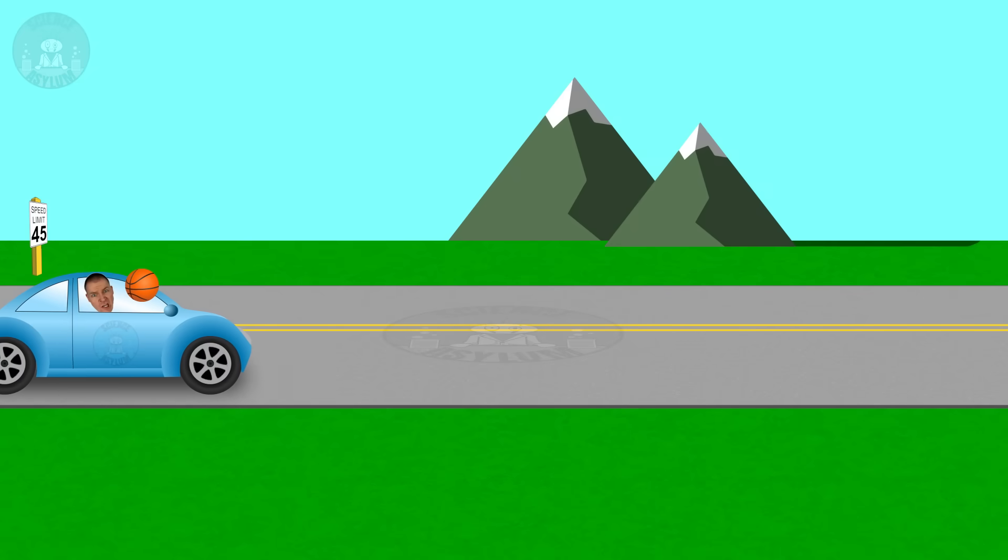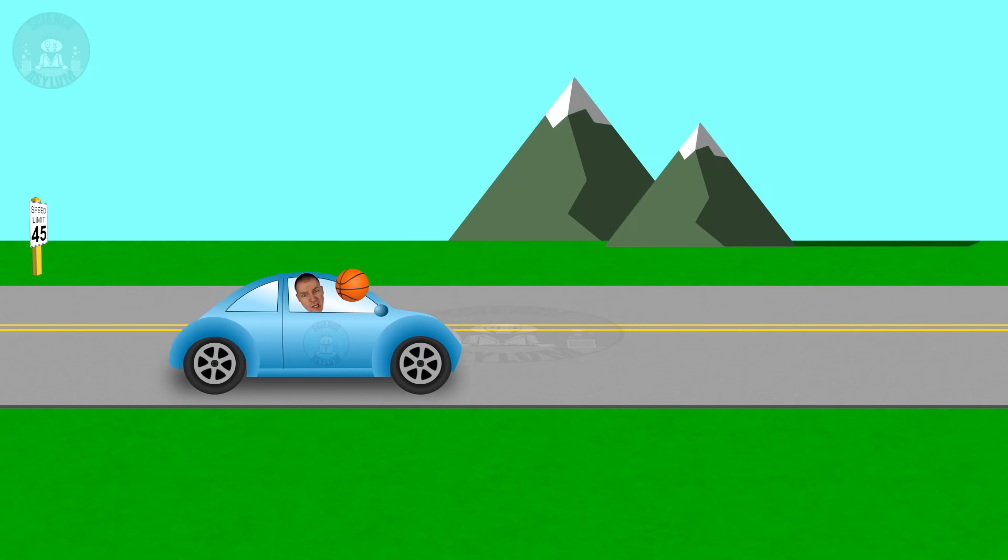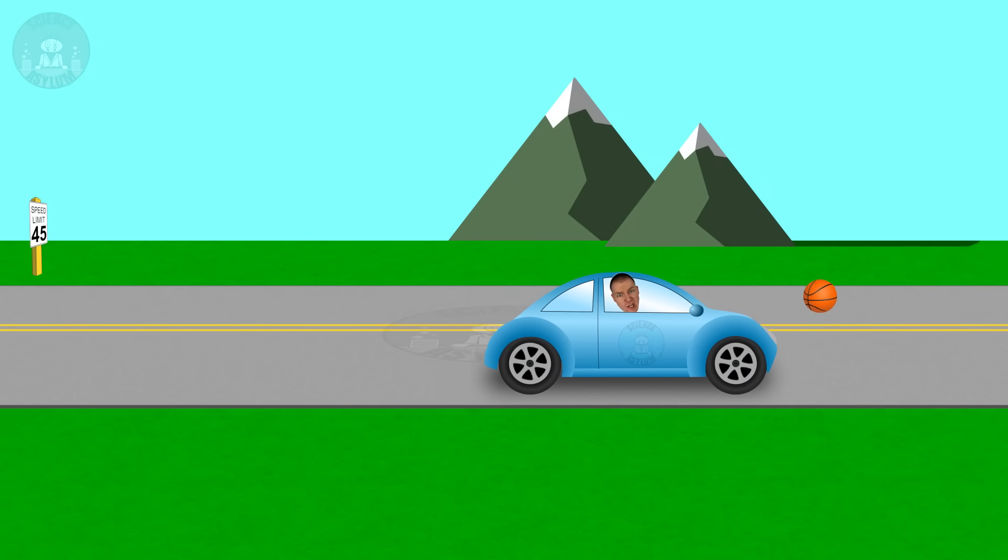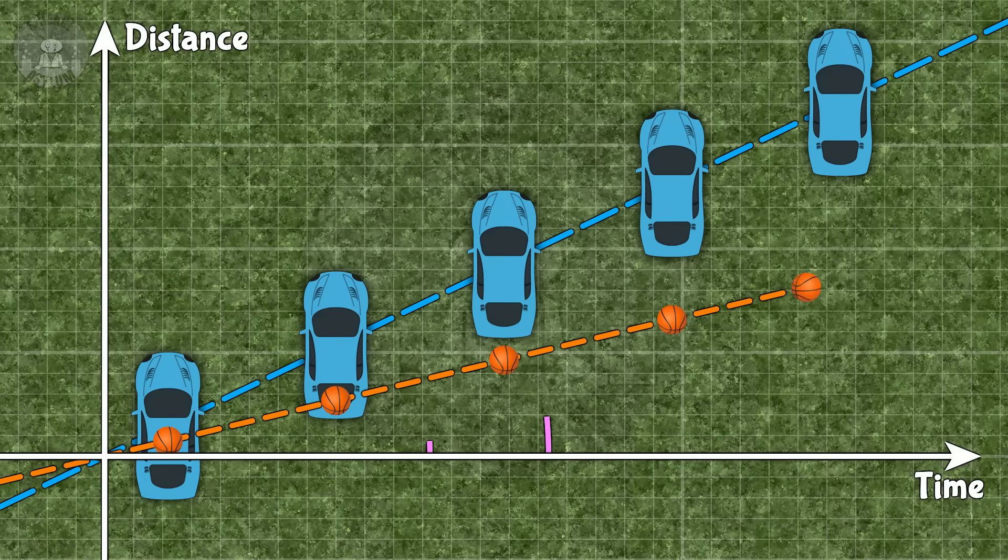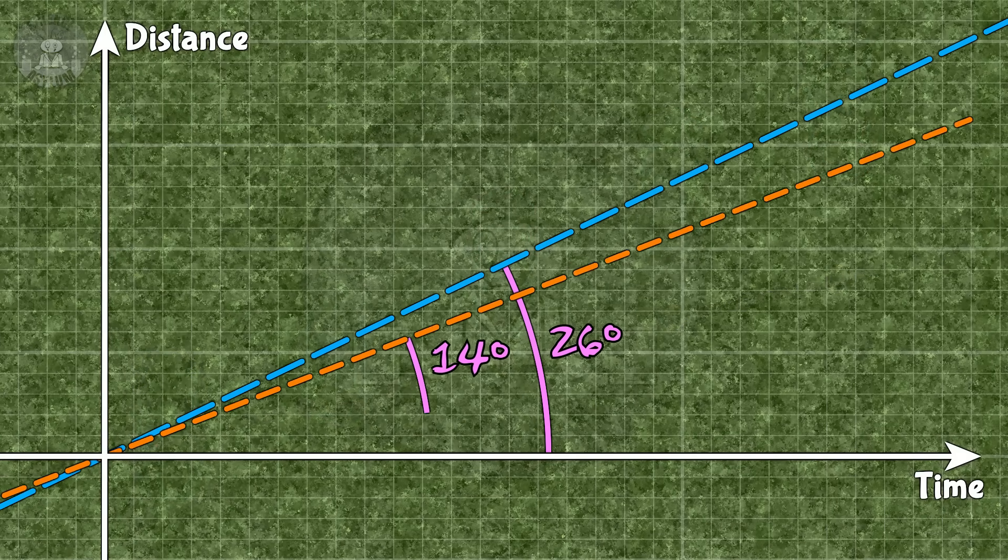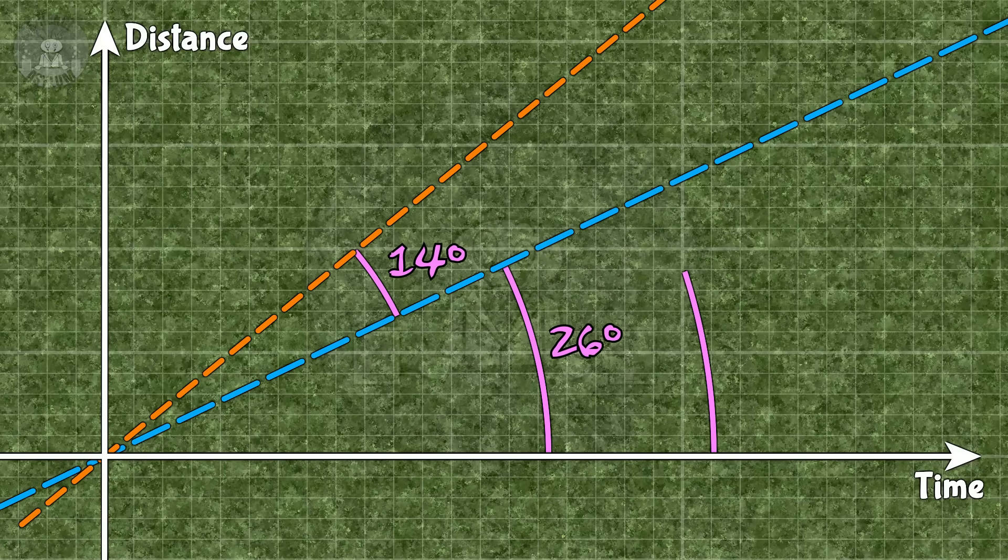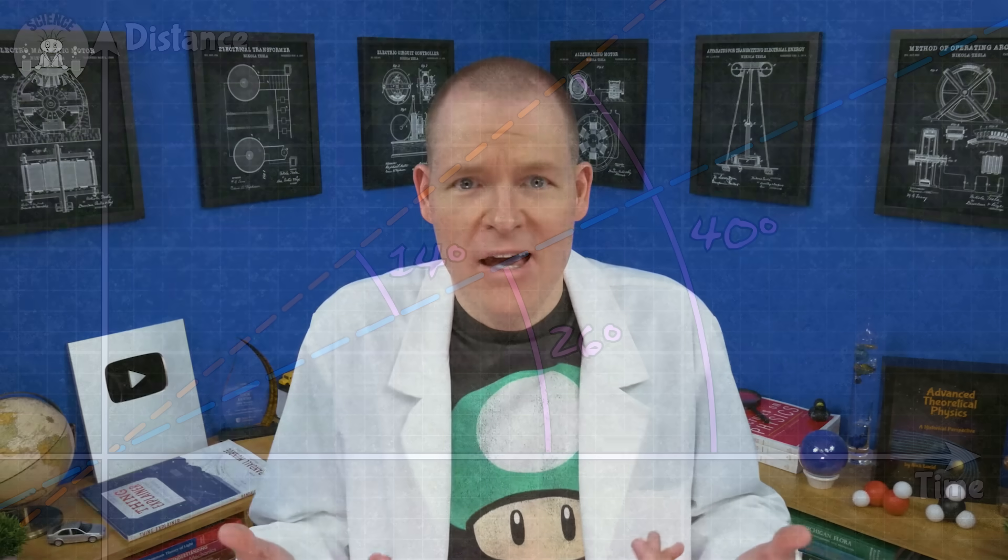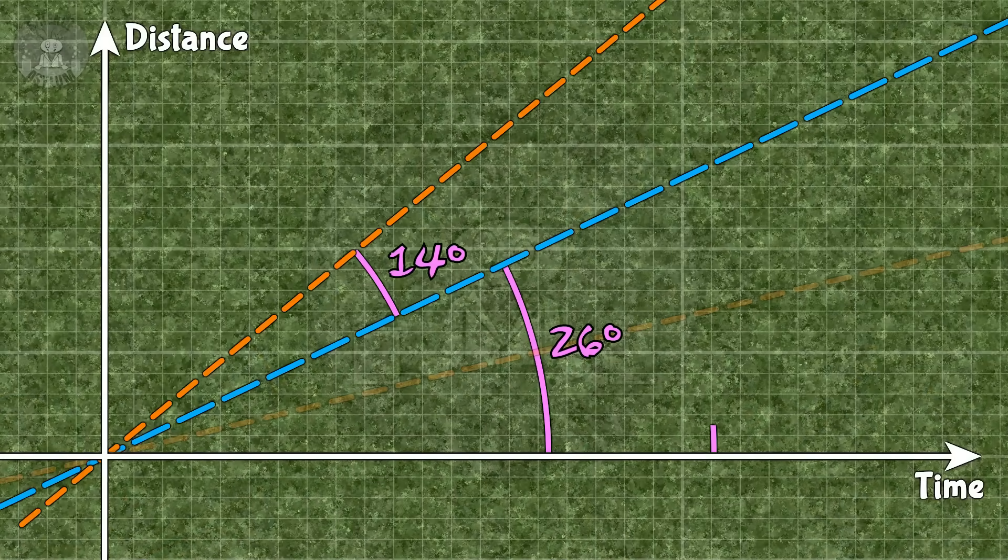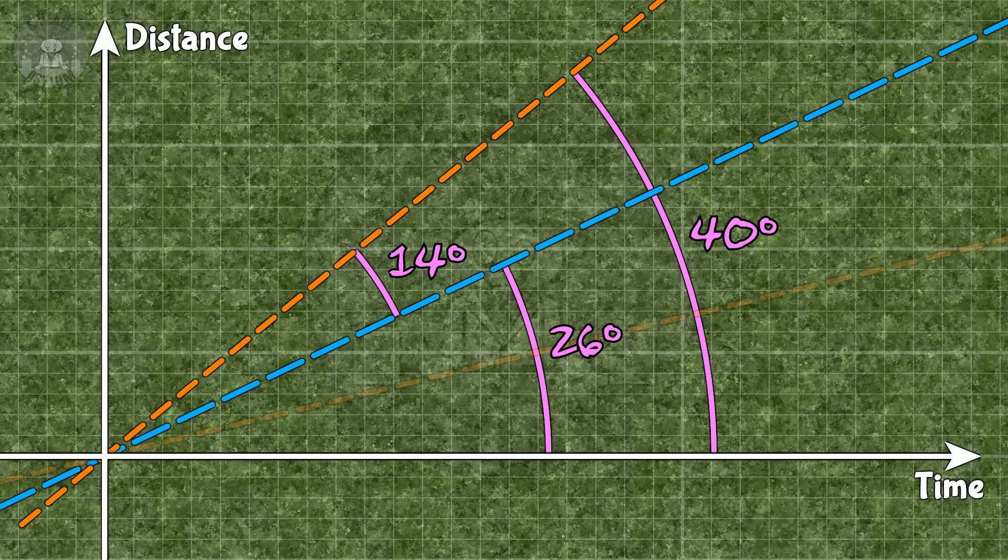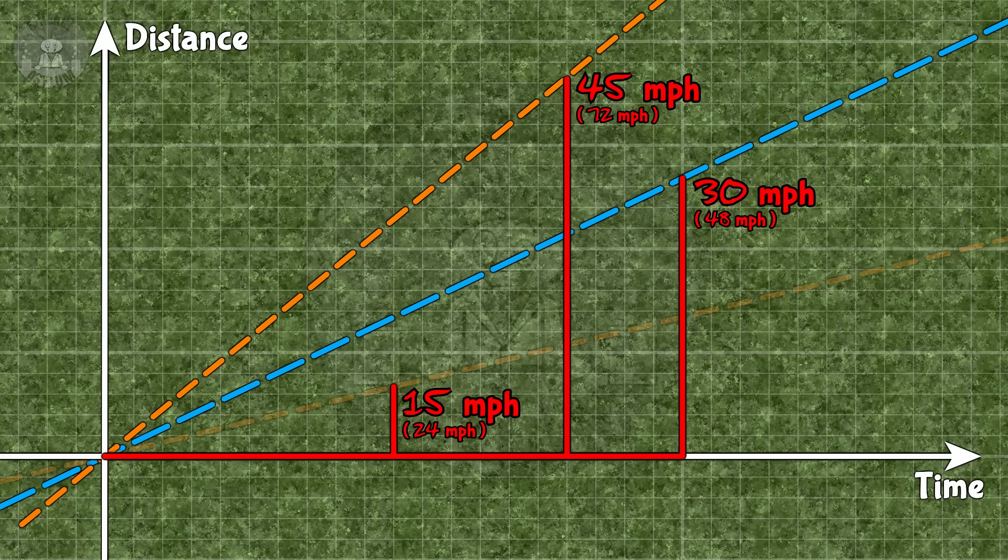Remember our previous example? We were in a car traveling at 30 miles per hour and we threw a ball at 15. Here's the speed of the car and here's the speed of the ball, each represented as an angle. The speed of the ball relative to someone standing on the ground is just the two angles added together. The angles just add, which is the rule we originally wanted speed to follow. Unfortunately, traditional speed isn't measured as the angle of these lines.